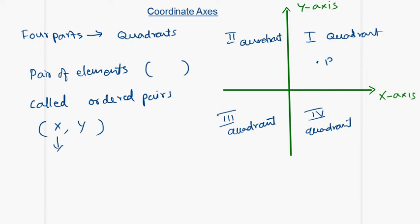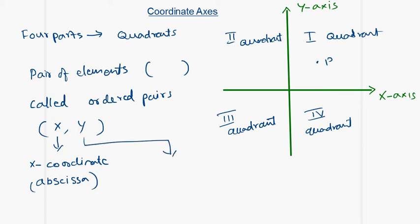The first element of the ordered pair is called the x-coordinate, also called the abscissa. The second element is called the y-coordinate, also known as the ordinate. The x-coordinate represents the perpendicular distance of the point P from the y-axis. The y-coordinate represents the perpendicular distance of the point P from the x-axis.